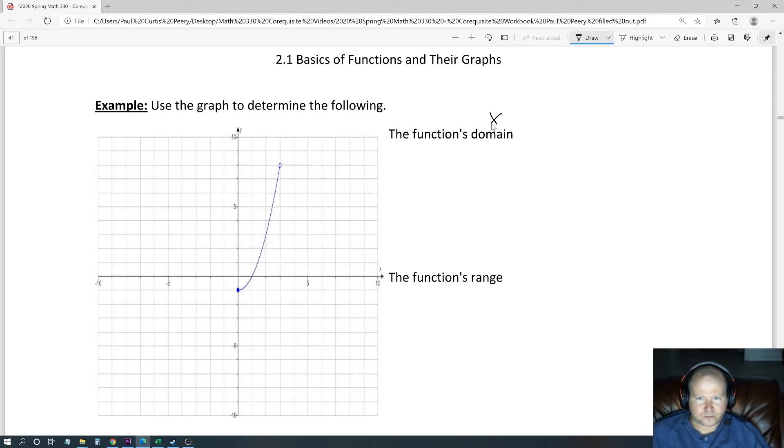Domain are the x values. In this case, it looks like it starts right here. This is the lowest x value, which would be zero. We're going to include zero because it's a solid circle, and it keeps going all the way to the right until this point right here.